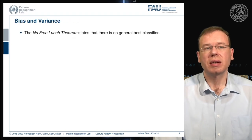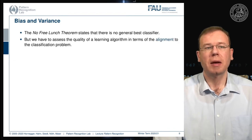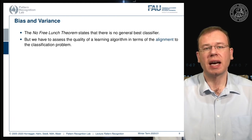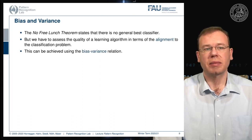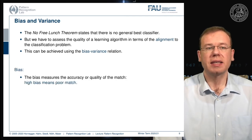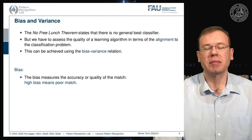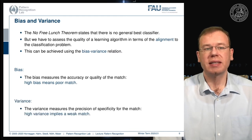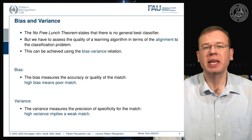The no free lunch theorem tells us there is no general best classifier. We have to assess the quality of the learning problem in terms of its alignment to the respective classification problem. This can be done using the bias-variance relation. Bias measures the accuracy or quality of the match — high bias means a poor match. Variance measures the precision or specificity of the match — high variance implies a weak match.